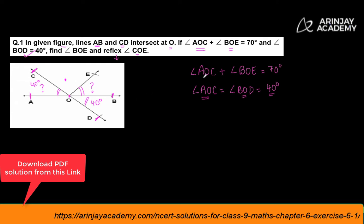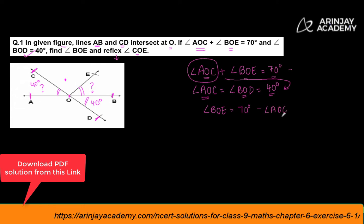Now you are given that the sum of angle AOC and angle BOE is equal to 70 degrees. But angle AOC we have found out is equal to 40 degrees. In other words, we can say that the value of angle BOE is equal to 70 degrees minus the value of angle AOC, which is 40 degrees — so 70 minus 40 equals 30 degrees. The value of angle BOE is equal to 30 degrees.